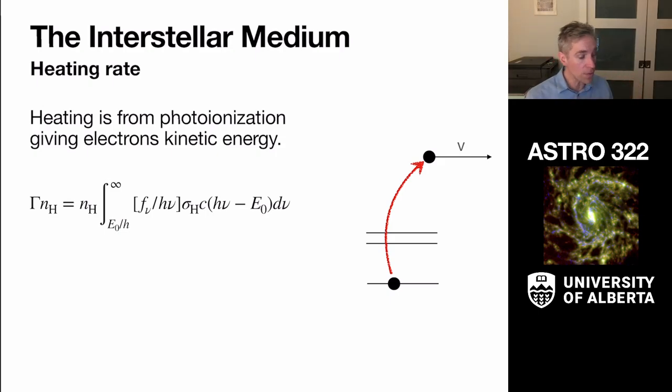So what this means is that we can actually convert, we can actually compute the energy that comes from photoionizations, which is essentially, we care about the energy of a photon coming in minus the ionization energy below.